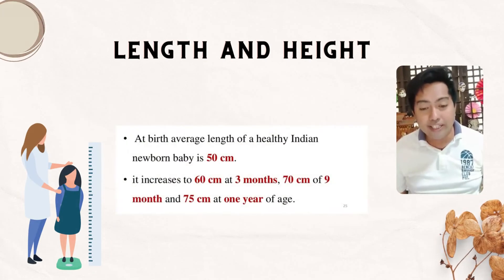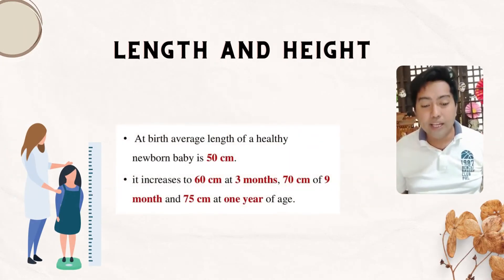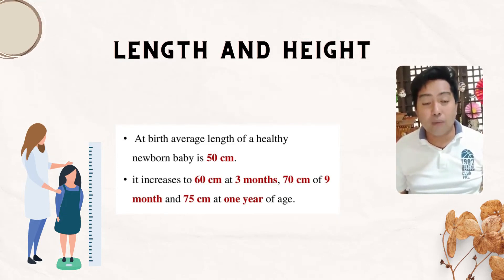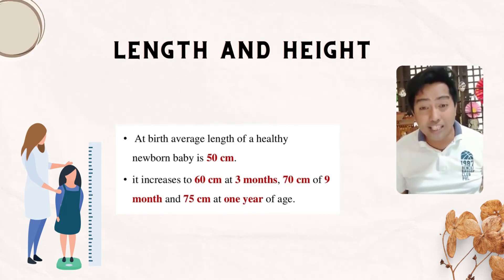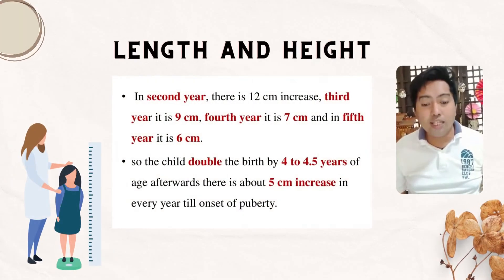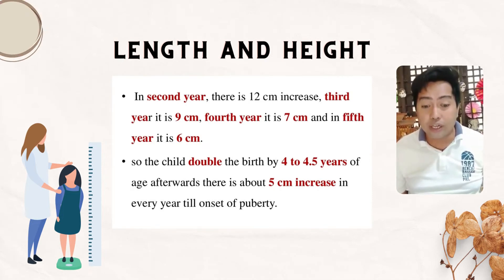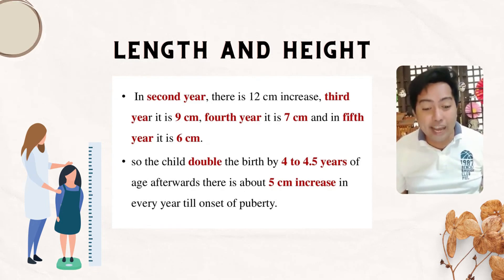At birth, the average length of a newborn baby is 50 cm. It increases to 60 cm at 3 months, 70 cm at 9 months, and 75 cm at 1 year of age. The child doubles the birth length by 4 to 4.5 years of age; after that, there is about 5 cm increase every year until onset of puberty.